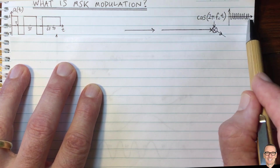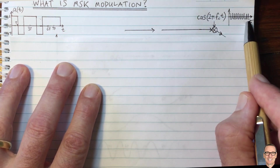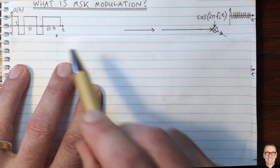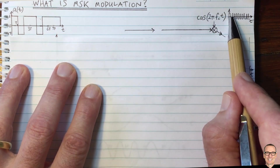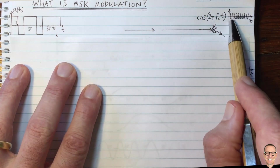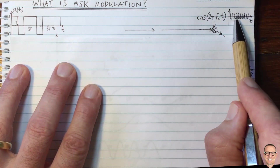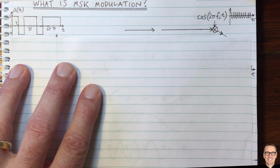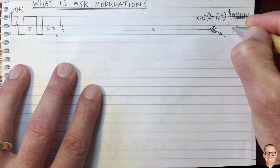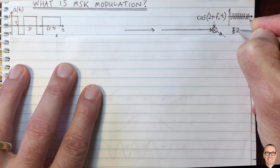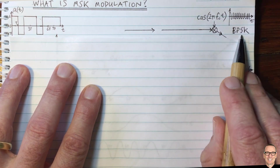Here I've drawn a picture of what that looks like — it's a very high frequency cosine wave. When we multiply these two together, the plus ones keep the same cosine and the minus ones flip the phase. We call this BPSK, binary phase shift keying.